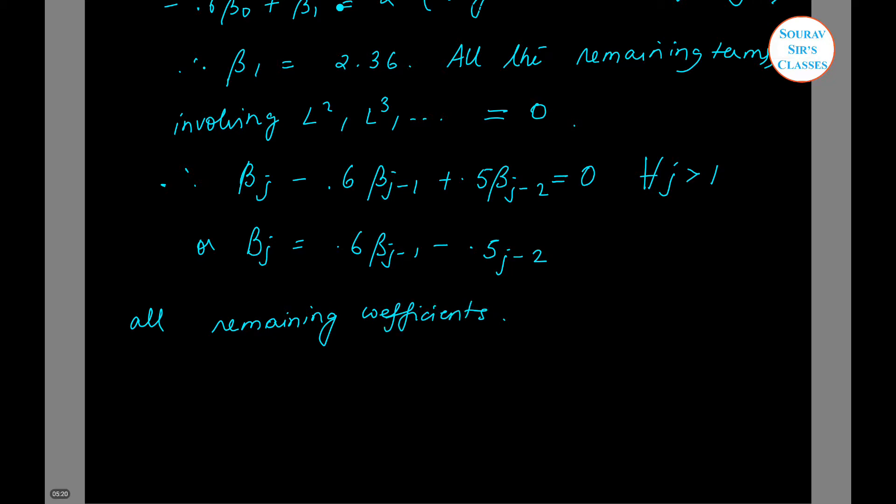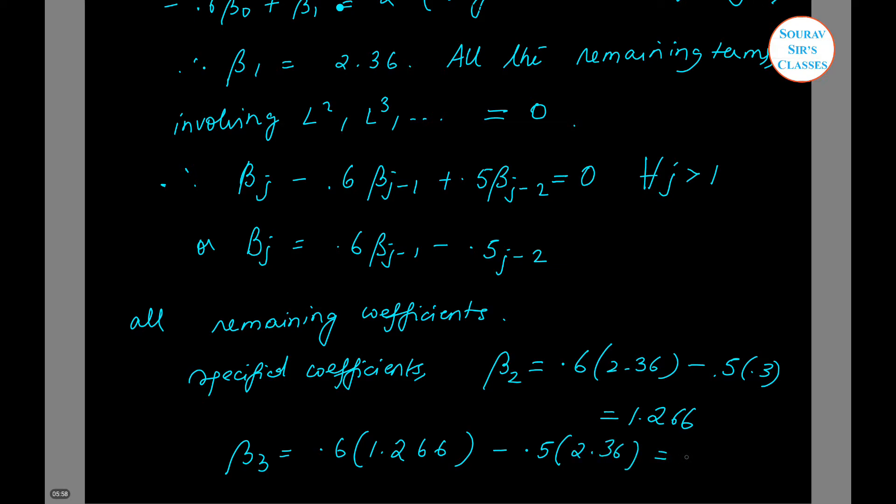So for the specified coefficients, beta 2 is equal to 0.6 times 2.36 minus 0.5 into 0.6 and this is 1.266. And beta 3 is equal to 0.6 times 1.266 minus 0.5 times 2.36 which is equal to minus 0.4204.